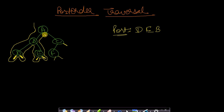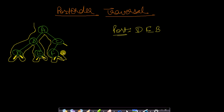After B we reach A for the second time — do nothing. Go to its right subtree; it has C. C is reached for the first time — do nothing. We go to F; F is reached for the first time — do nothing. Go to its left subtree — there is none, come back to F. Go to its right subtree — there is none — come back to F. Since both left and right subtrees of F have been traversed and F is being reached for the third time, we print F.